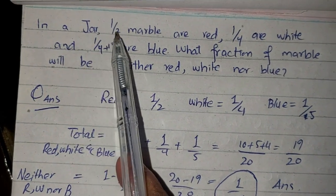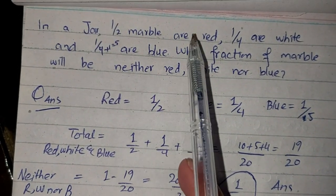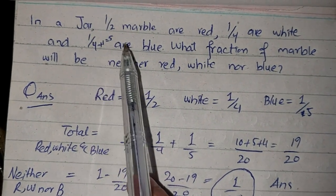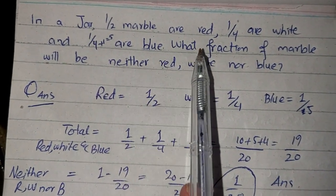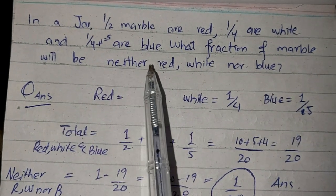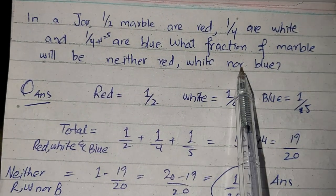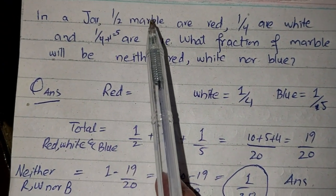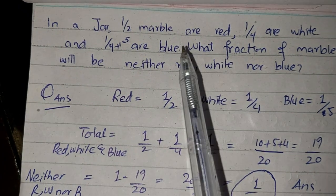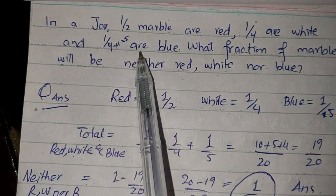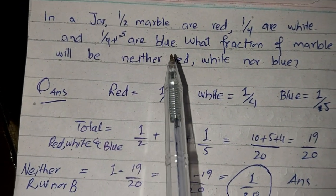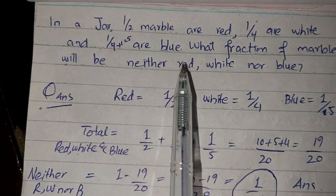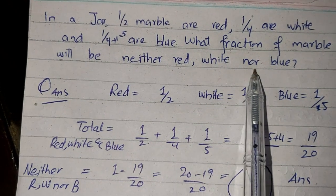In a jar, one by two marbles are red, one by four are white and one by five are blue. What fraction of marble will be neither red, white nor blue?